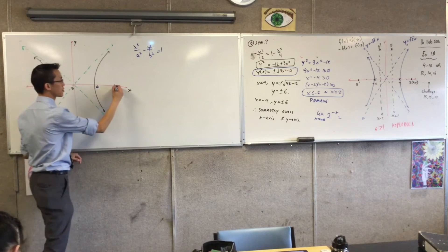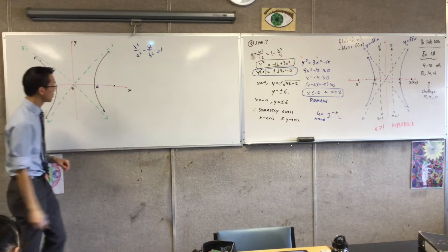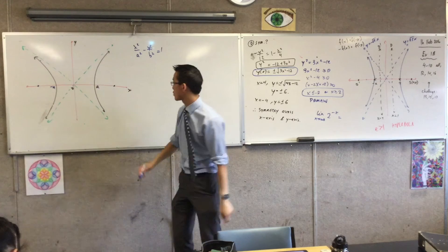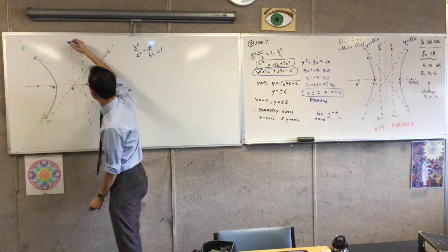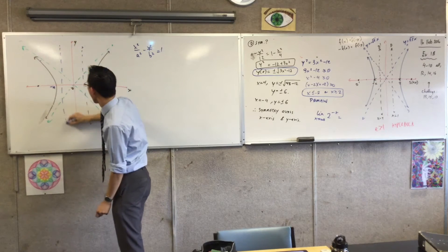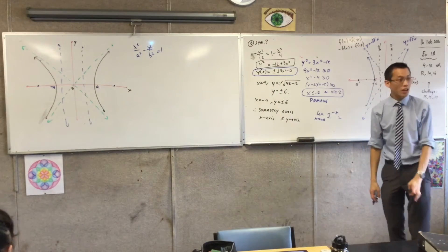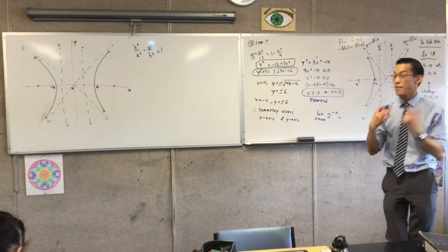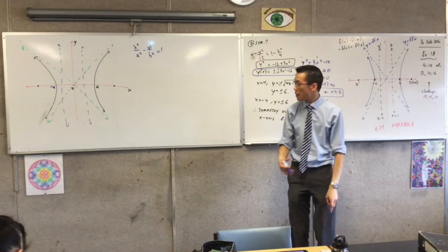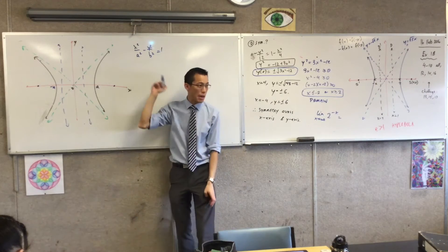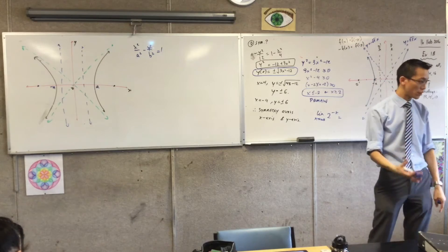Now you've got your foci over here and over here. And then you also have your directrices. Something like this. Now, just like with the ellipse, you can make some pretty fancy geometric arguments to determine, in terms of my A and my B, where is everything? Now, I'm not going to rehearse that for you. You can attempt it. It's not difficult.